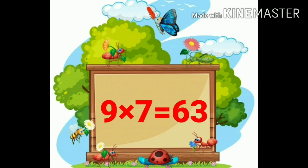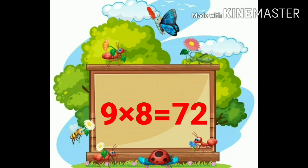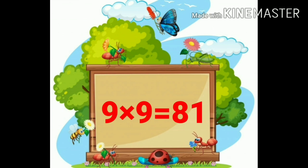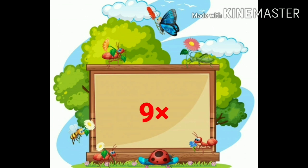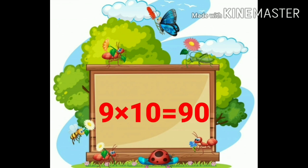Nine sevens are 63. Nine eights are 72. Nine nines are 81. Nine tens are 90. Again we learn multiplication table of 9.